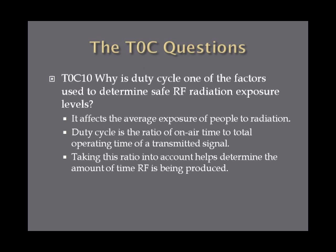Why is duty cycle one of the factors used to determine safe RF radiation exposure levels? This is a difficult question — duty cycle is an obscure concept, so you should probably just memorize the answer: it affects the average exposure of people to radiation. A duty cycle is the ratio of on-air time to total operating time of a transmitted signal, and taking that ratio into account helps determine the amount of RF being produced.